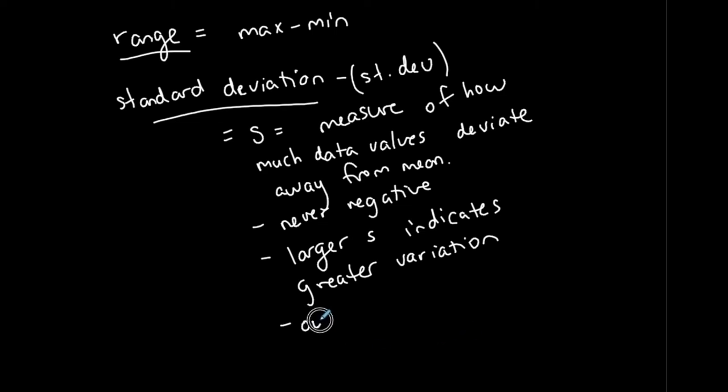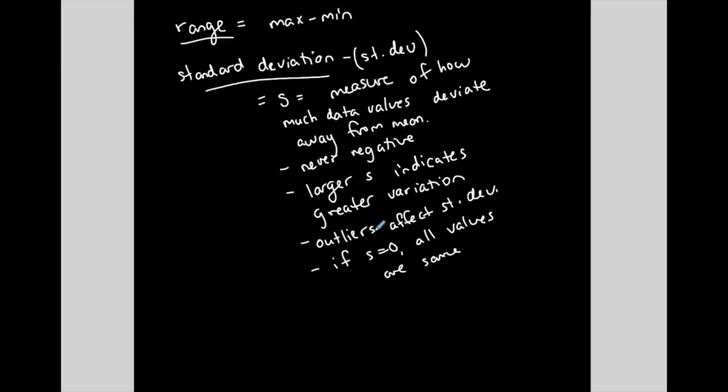Outliers, values that are very far apart, far away from the general idea of your data, outliers affect your standard deviation. And obviously, if the larger the standard deviation, the greater the variation. So if your standard deviation is zero, then all the values are the same in your set. A smaller standard deviation would indicate less variation. So if your standard deviation is zero, then that would indicate no variation, which means all the values in your data set are the same.